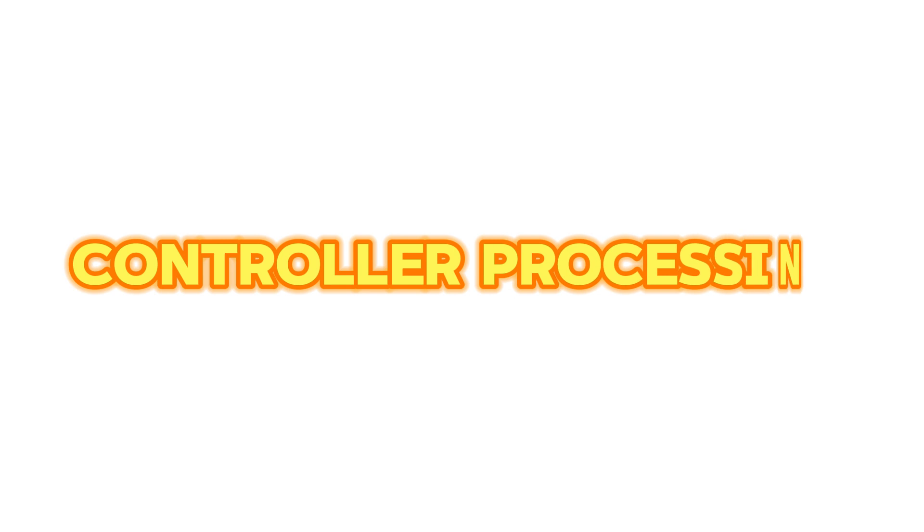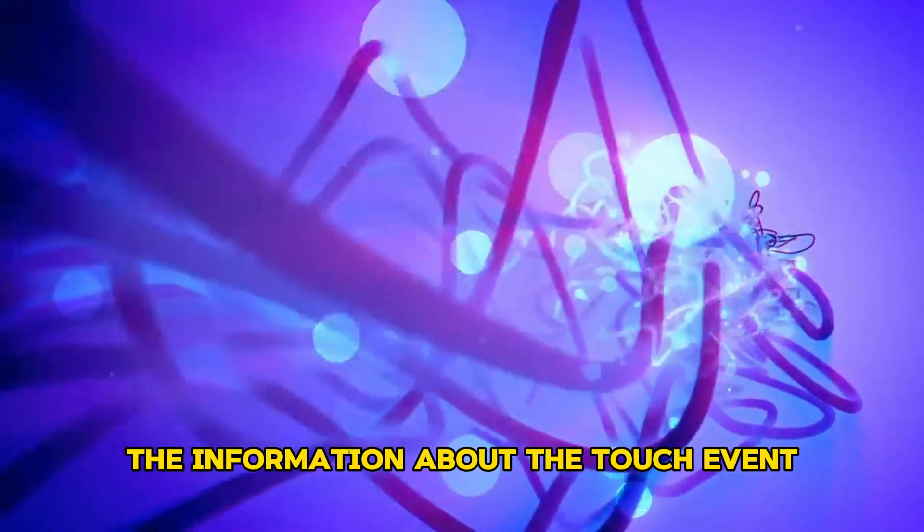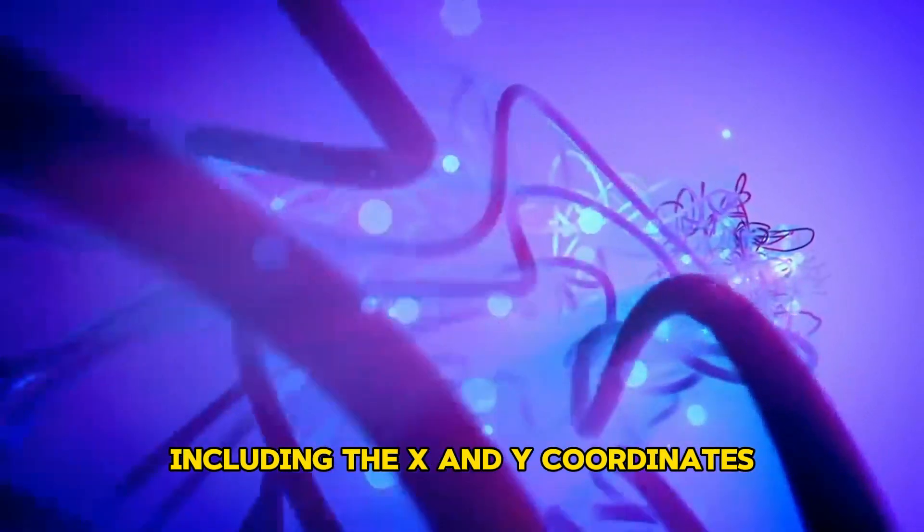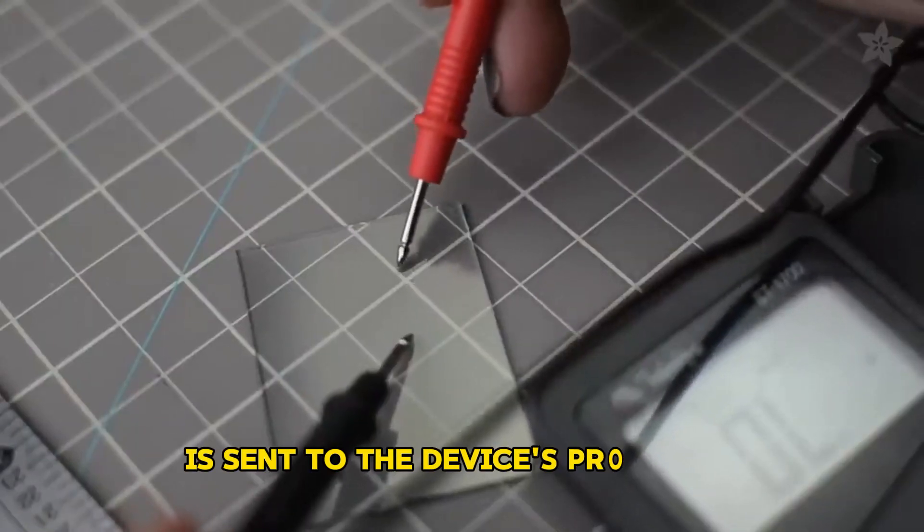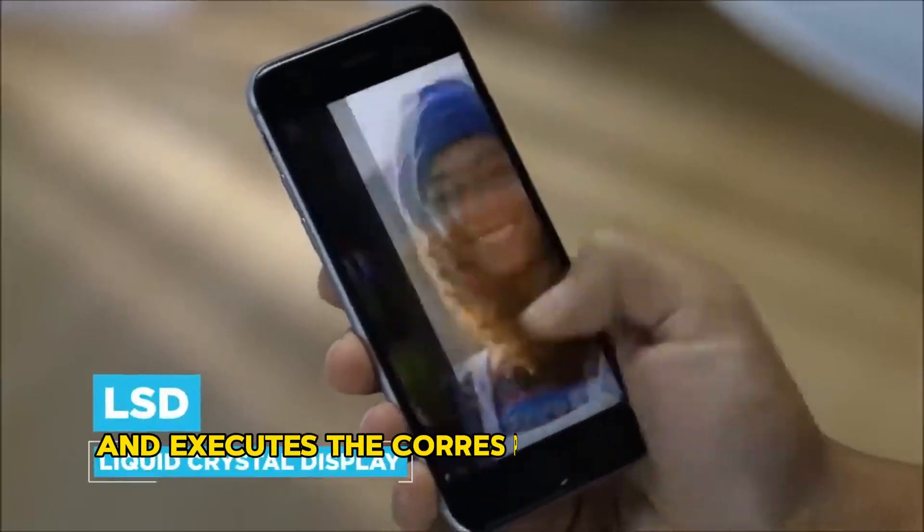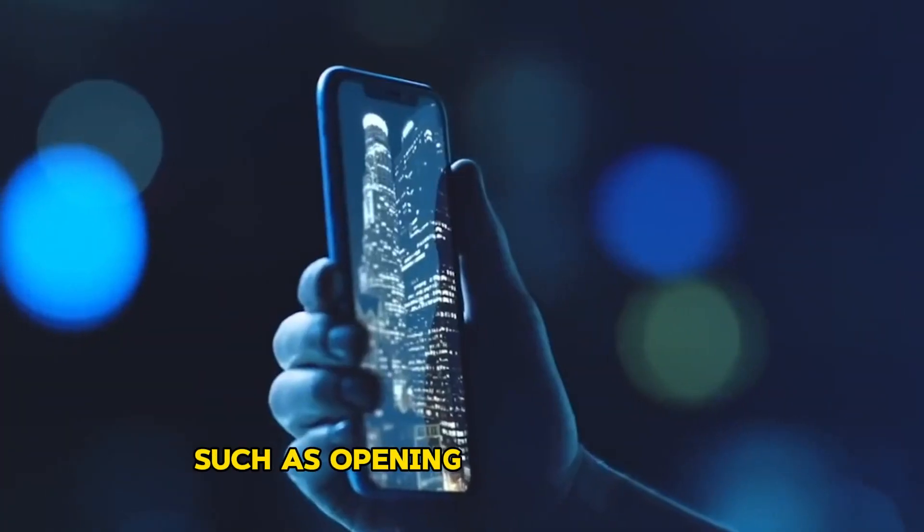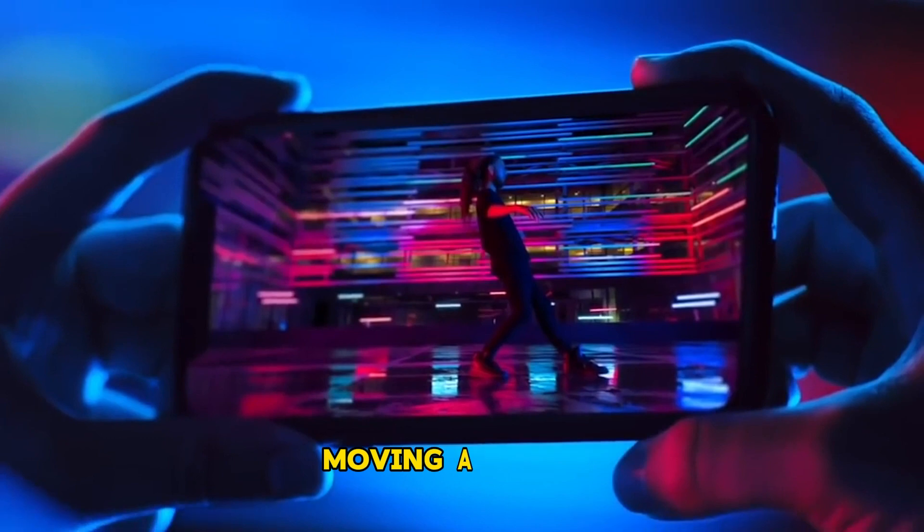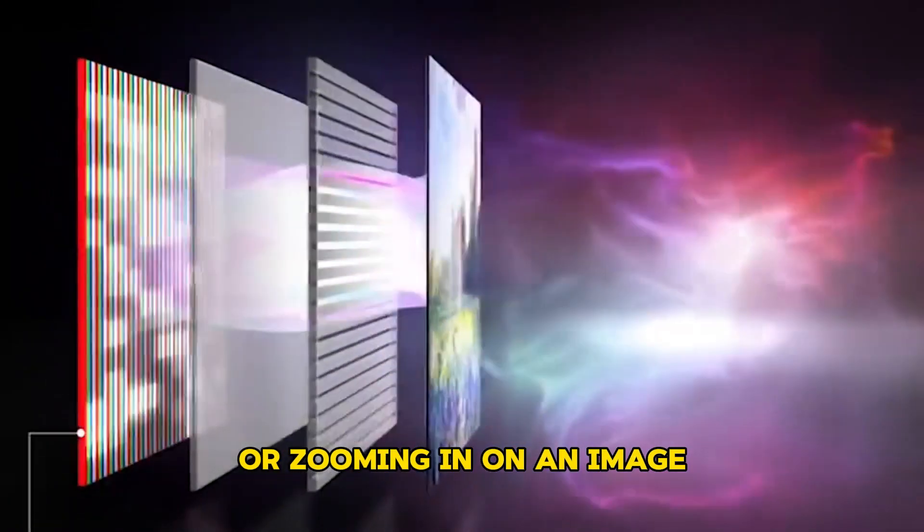Controller processing. The information about the touch event, including the x and y coordinates, is sent to the device's processor. The processor interprets this data and executes the corresponding action or command, such as opening an application, moving a cursor, or zooming in on an image.